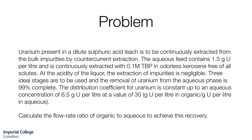Our problem statement tells us that uranium is present in a dilute sulfuric acid leach and that's to be continuously extracted from the impurities by counter-current extraction. The aqueous feed contains 1.5 grams of uranium per litre and it's continuously extracted with our solvent that's free of all solutes. At the acidity of the liquor, the extraction of impurities is negligible. Three ideal stages are to be used and the removal of uranium from the aqueous phase is 99% complete.